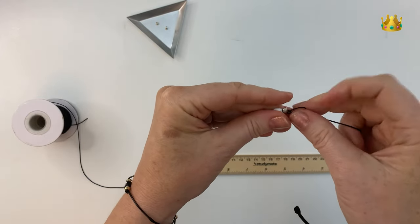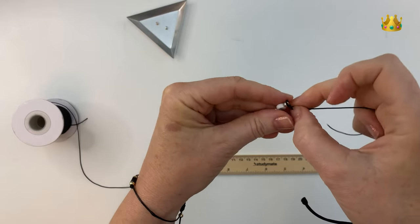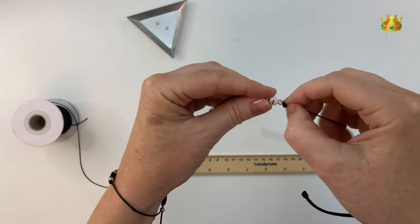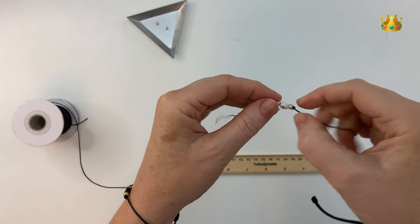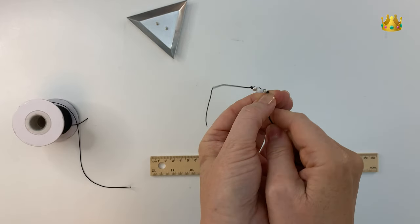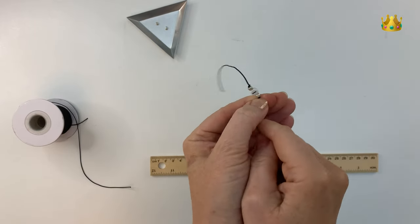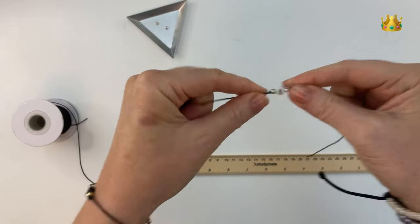This time working that knot down nice and slowly and gently so that we can position it right up against the beads. Once it's in the right position you can pull it nice and tight and that should hold your beads secure in the center.